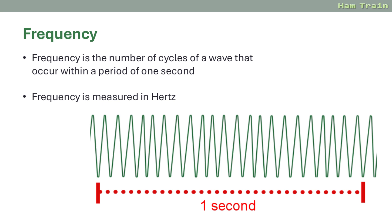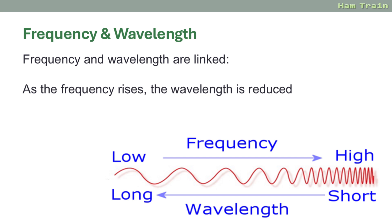Frequency is the number of cycles — peak to peak of each wave — that occur within a one-second period, and frequency is measured in hertz. For example, if you count 22 cycles in that one-second period, you have a frequency of 22 hertz. Radio signals are often measured in megahertz — that's millions of hertz per second. As the frequency rises, the wavelength is reduced. In summary: the higher the frequency, the shorter the length of the wave.